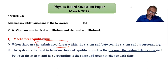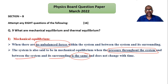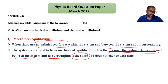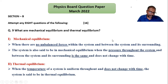In other words, when the pressure throughout the system is the same, and the pressure between the system and surroundings is also the same, the system is in mechanical equilibrium. Remember: no unbalanced force, and pressure throughout the system is uniform.